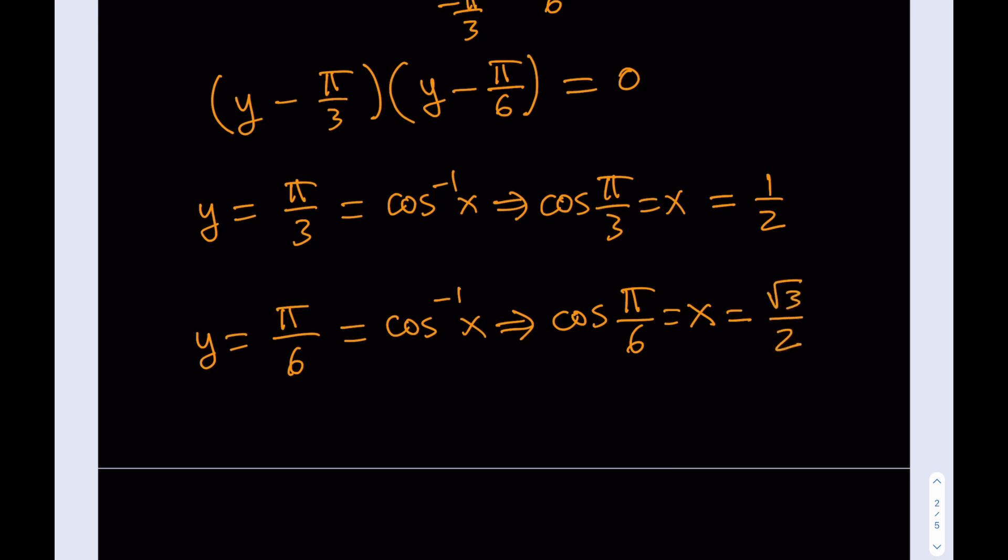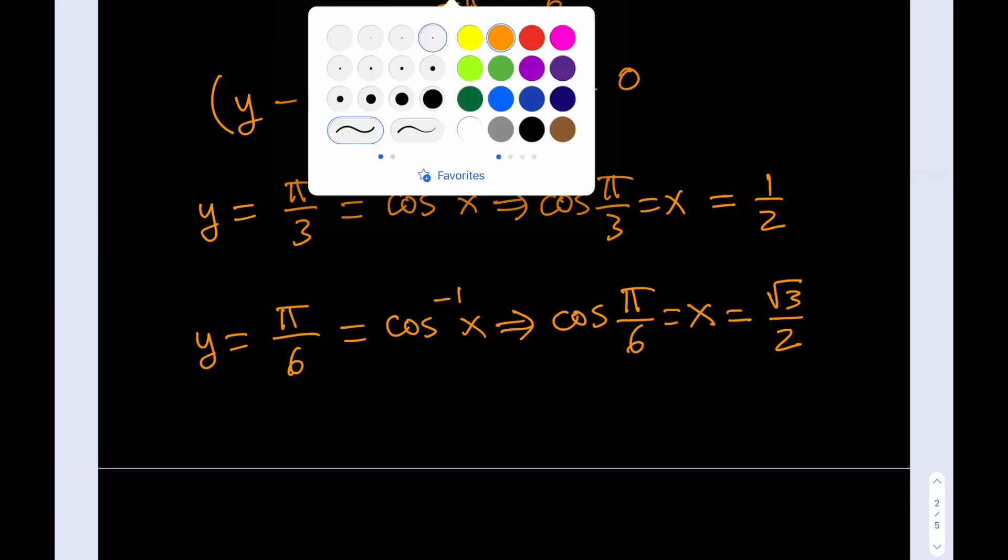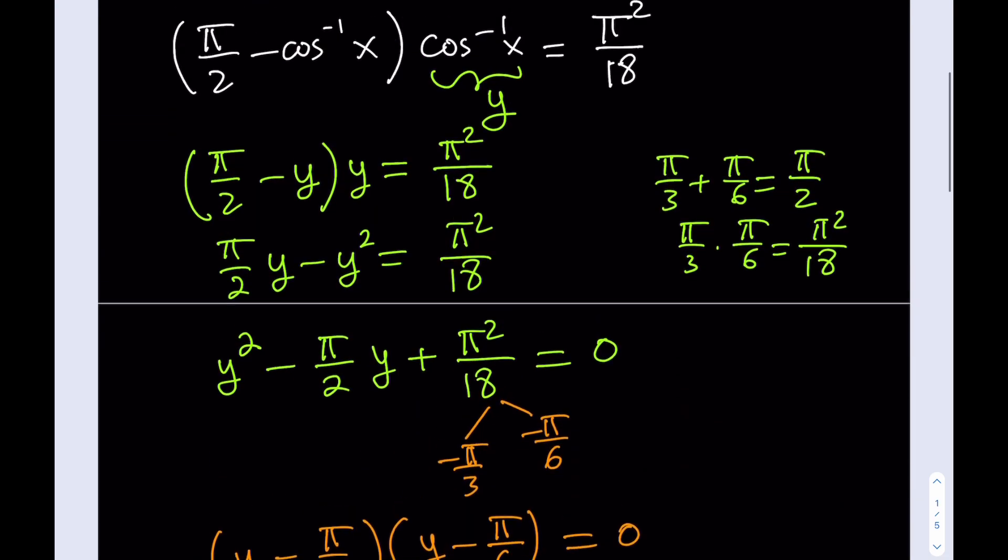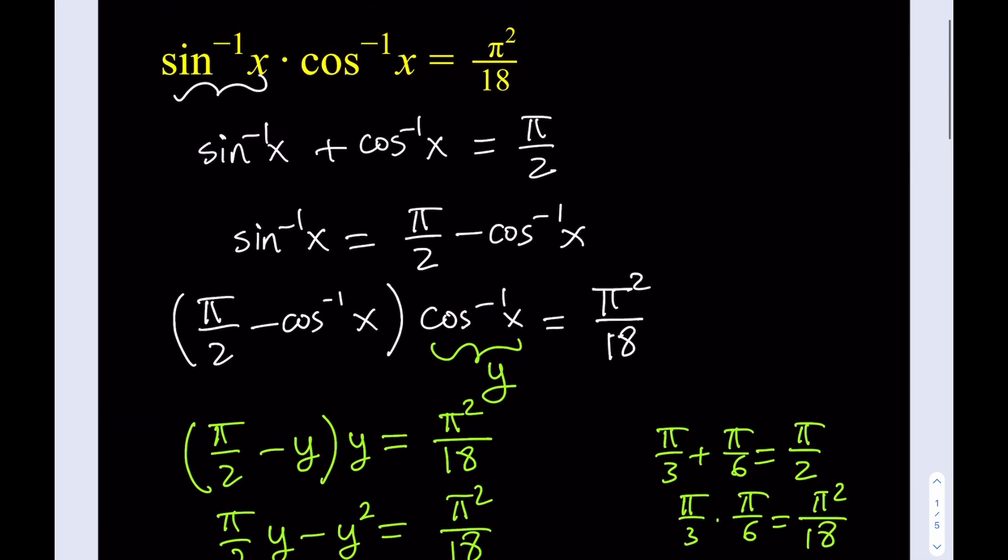So we found the x values. Happy ending. We got the answer. These are the answers. We have two solutions to this equation, and the solutions are one half and square root of 3 over 2, which are basically the solutions of this original equation.